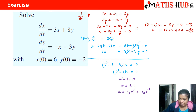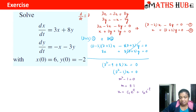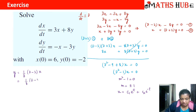Now how do we obtain y? Looking at equation 1, (D − 3)x = 8y, so y = (1/8)(D − 3)x. Therefore y = (1/8)(D − 3) applied to c₁e^t + c₂e^(−t). Let us operate this operator and expand it.